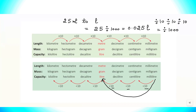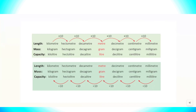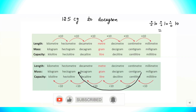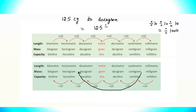Similarly, if I need to convert 125 centigrams to decagrams, I go from centigram to decagram on the table. There are three tens in between, so I divide by 10 three times — that means I divide by 1000. So 125 divided by 1000 equals 0.125 decagrams. That is how we convert smaller units into bigger units.